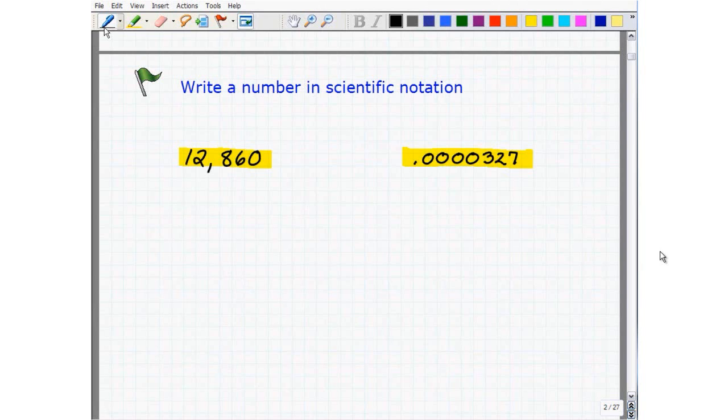All right. I'll start with the large number first. Now let me ask you here, where is the decimal point on the number 12,860? Where is the decimal point located at? All of you should have stated that the decimal point is located after that last zero.